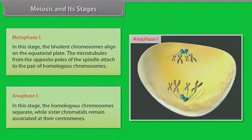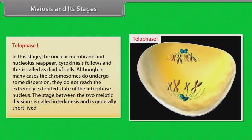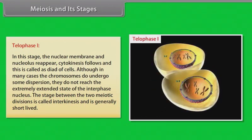Anaphase I is followed by telophase I. In this stage, the nuclear membrane and nucleus reappear. Cytokinesis follows and this is called dyad of cells. Although in many cases the chromosomes do undergo some dispersion, they do not reach the extremely extended state of the interphase nucleus. The stage between the two meiotic divisions is called interkinesis and is generally short-lived. Interkinesis is followed by prophase II.